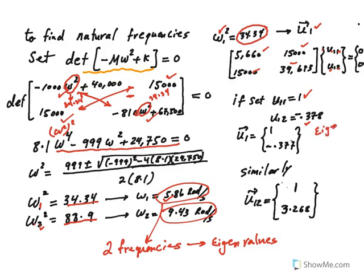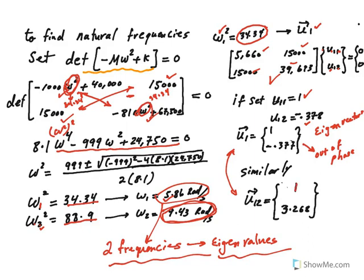So remember together, u_1 and u_2 are called eigenvectors, natural frequencies are called eigenvalues. This is out of phase because you have one positive one negative. Similarly if you plug in omega_2 into here and here and set u_21 equal to one, u_22 is 3.27 times that. So remember these just show you the ratio. Now what does that mean in terms of frequency?